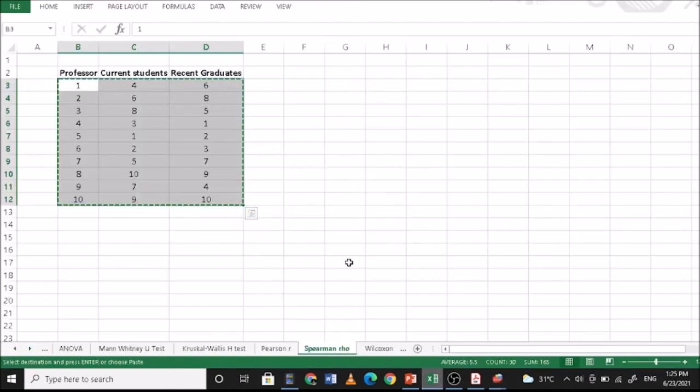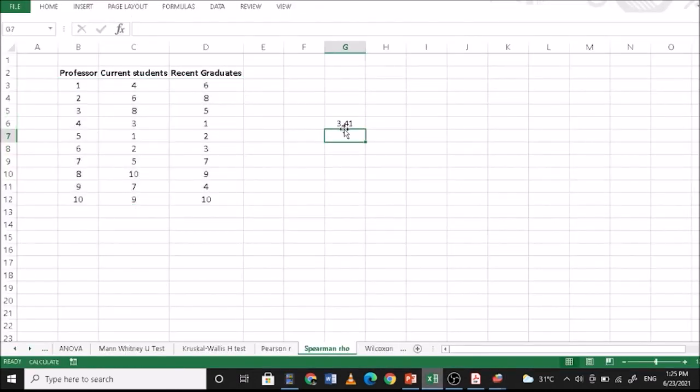In your Excel, you simply copy this 3.41. Since there are 10, the degrees of freedom is 9. And then sig 2 tells that this is a two-tailed test. We use equals T dot dist dot 2T—that's two-tailed test. The T statistic is 3.41 and the degrees of freedom is 9.